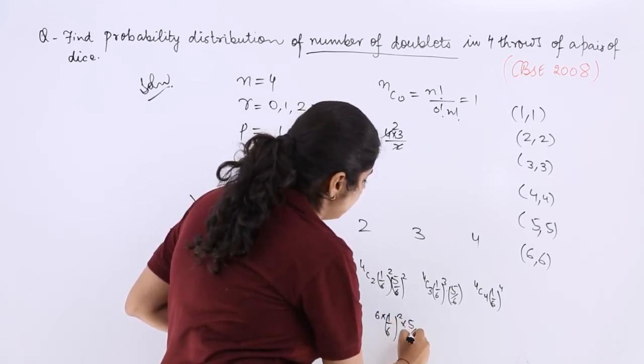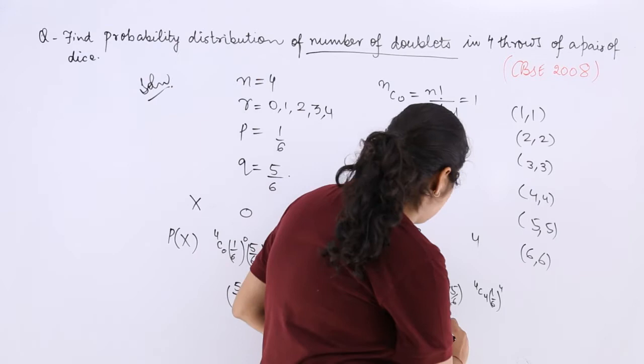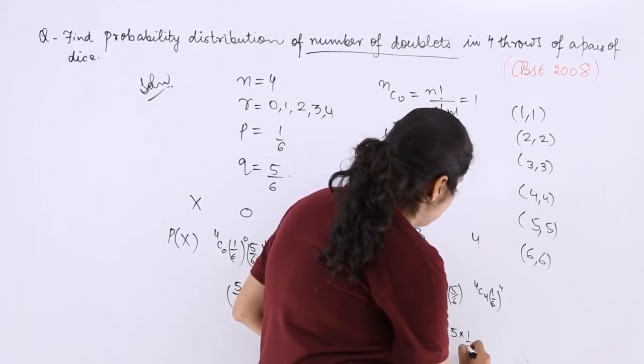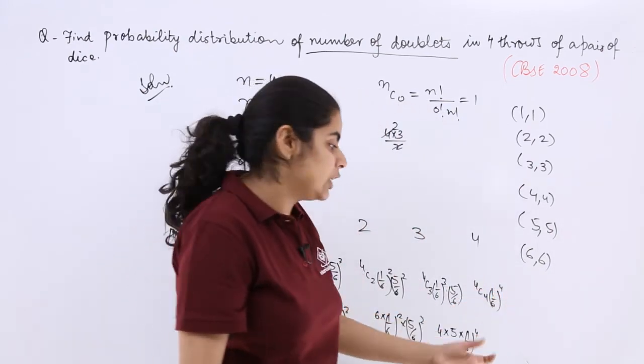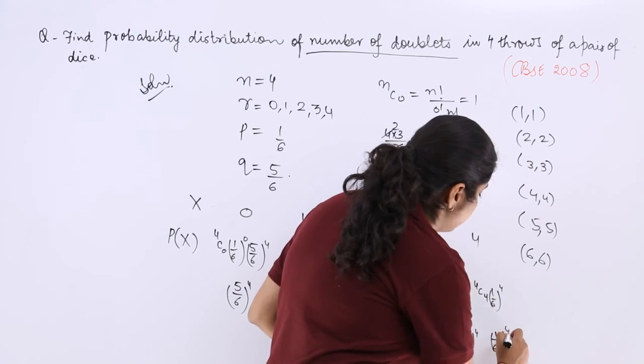Your wish whatever you want to do. Then this is 4 multiply by 5 multiply by 1 by 6 whole raised to the power 4. And similarly last but not the least, you can leave the answer upon solving. So this is 1 raised, 1 upon 6 whole raised to the power 4.